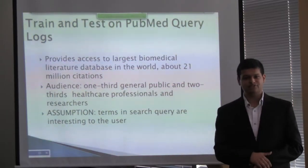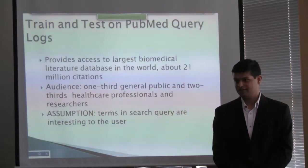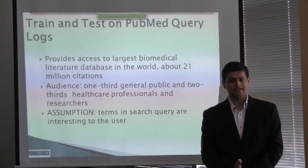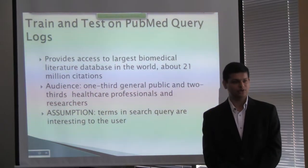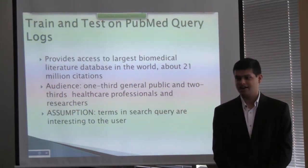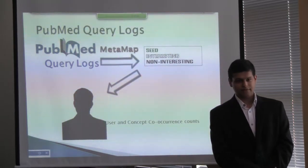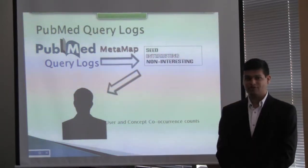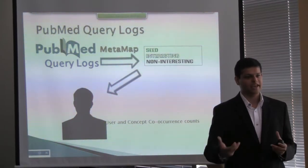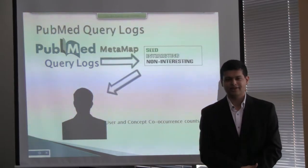Now, regarding training and testing on PubMed query logs: PubMed provides access to the largest biomedical literature database in the world, with about 21 billion citations. Research by NLM on the audience states that about one-third is the general public and two-thirds are healthcare professionals and domain experts. The assumption is that terms in a search query are interesting to users — if they are searching for something, it is of interest to them. PubMed query logs are first normalized using MetaMap, retaining only queries that contain, for example, Alzheimer's plus additional concepts, and then computing user and concept co-occurrence counts.